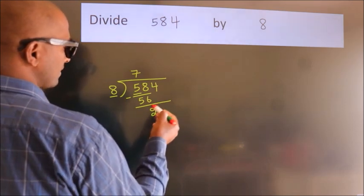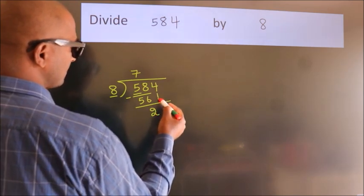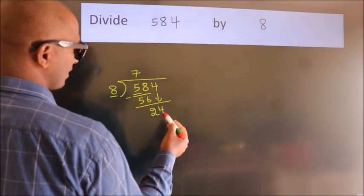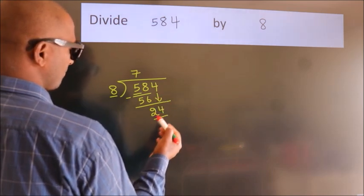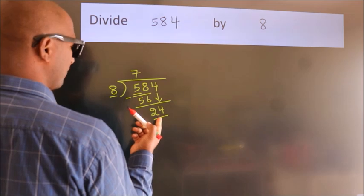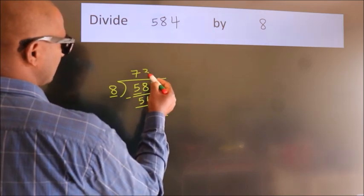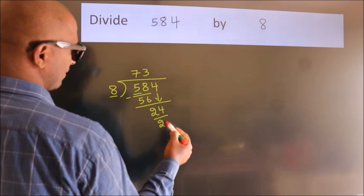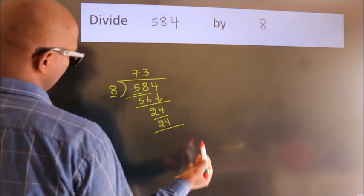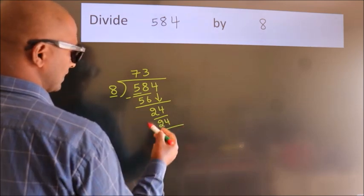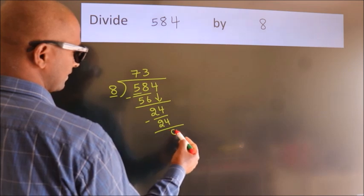After this, bring down the beside number. So 4 down, giving us 24. When do we get 24? In 8 table, 8 times 3 is 24. Now we subtract and get 0.